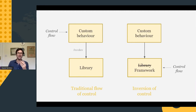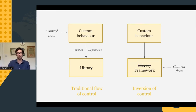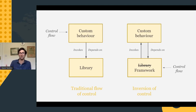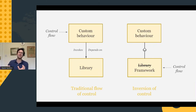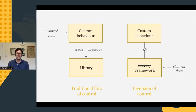In the traditional flow of control, an arrow can refer to a function invocation but also to the dependency relationship. In inversion of control, these arrows go in different directions: the framework invokes your custom behavior, but the dependency goes the other way. We can represent this with a ball-and-socket notation — the framework exposes a socket with a particular shape, and the custom behavior provides the ball that plugs into it. Whenever you see this, think: inversion of control.